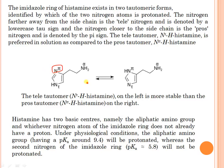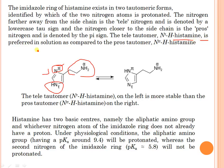The nitrogen closer to the side chain is called pros nitrogen, and the nitrogen far away from the side chain is the tau nitrogen. These are the two tautomeric forms. The closer nitrogen is denoted by the pi sign, as indicated in the structure.